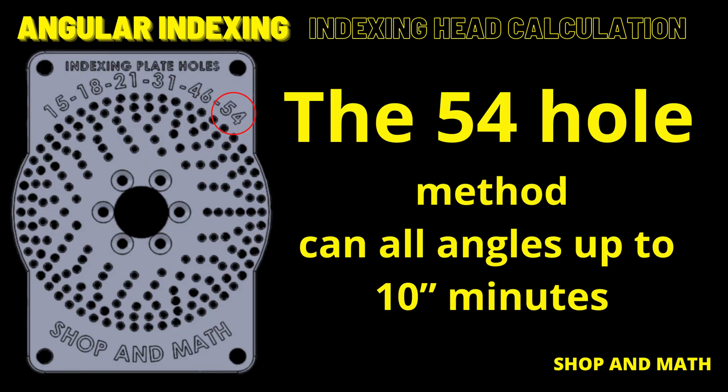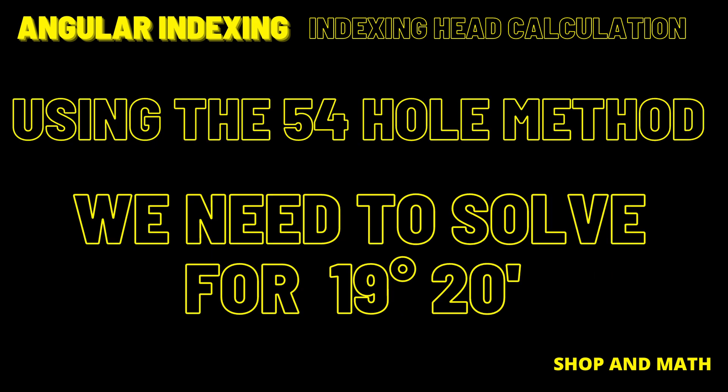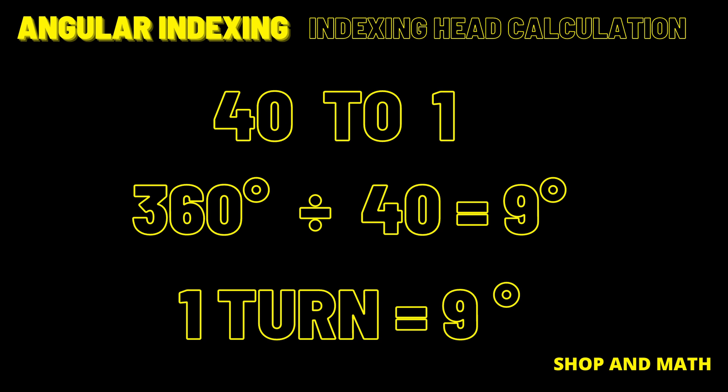The second method, and my personal favorite, the 54 hole plate method. With this method you can cut any angle up to 10 minutes. For this example we are going to cut 19 degrees and 20 minutes. For this demonstration we are going to be using a 40 to 1 indexing head. So one full rotation is 360 degrees divided by 40 equals 9 degrees. Therefore one turn equals 9 degrees.